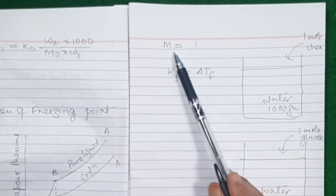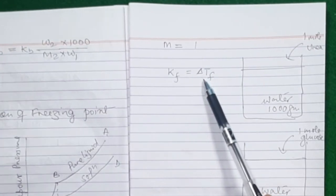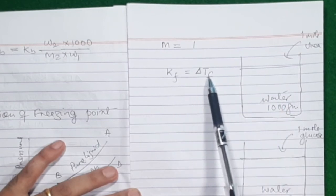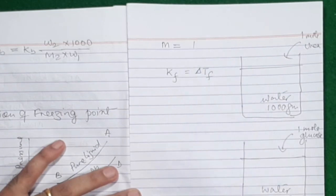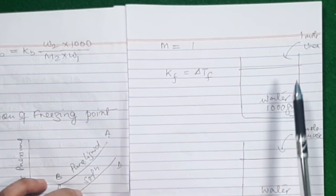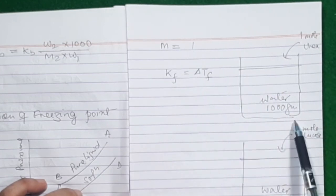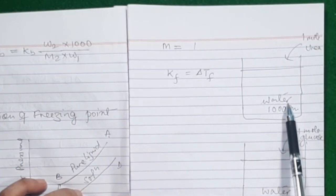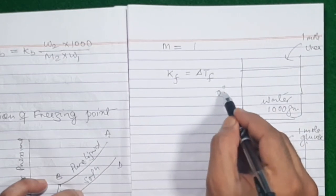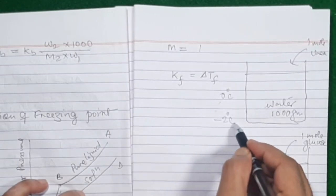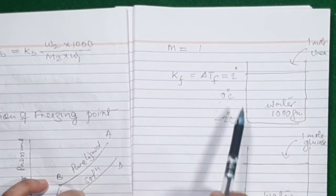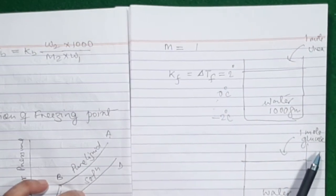Why is it called the cryoscopic constant? Because here we are dealing with freezing, and the science of freezing is cryogenics — that's why this constant in the expression for depression of freezing point is called the cryoscopic constant. To find the cryoscopic constant of water: take 1000 grams of water and add 1 mole of urea. Molality is now 1. Because of the addition of urea, the freezing point of water will come down — let's say it freezes at minus 2 degrees Celsius.